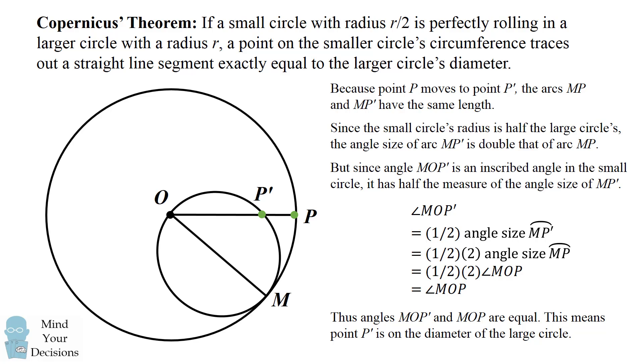So this shows that when you have a point on this small circle and you trace it out along this rolling in the larger circle, it will always be along the diameter of the larger circle. Did you figure out the illusion? And then did you know why it works?